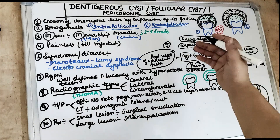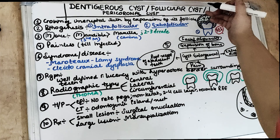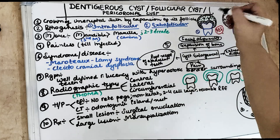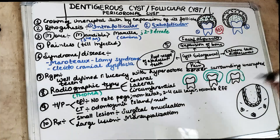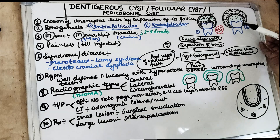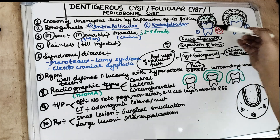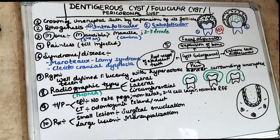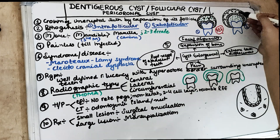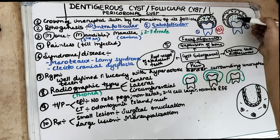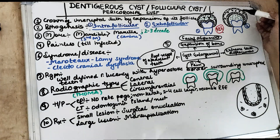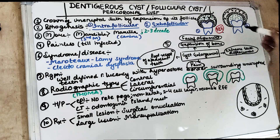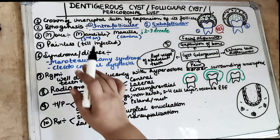Intrafollicular means within the follicle — between the outer enamel epithelium and the inner enamel epithelium; the green colored dots you can see in the diagram represent the cystic space. Now coming to the second theory, the Extrafollicular theory: accumulation of fluid is between the unerupted tooth and the reduced enamel epithelium. So it is between the tooth and the inner enamel epithelium — the cystic space in case of the Extrafollicular theory.